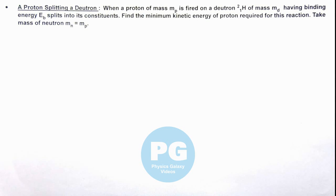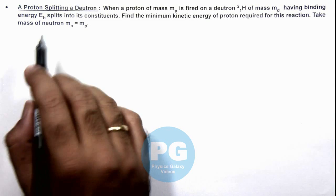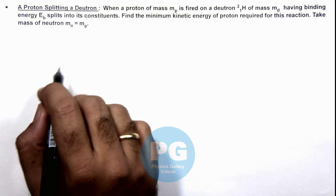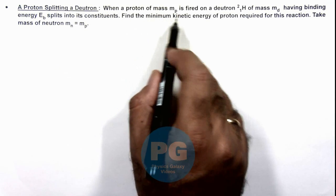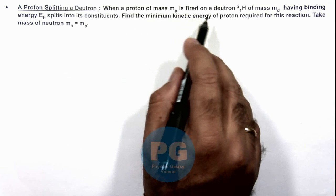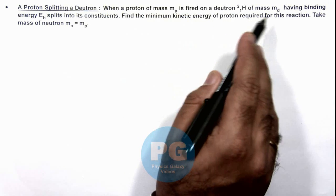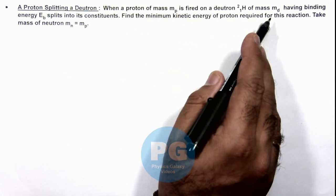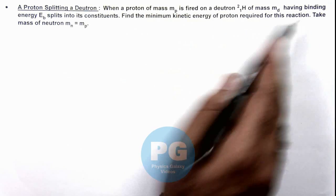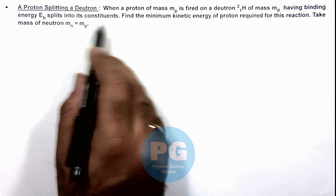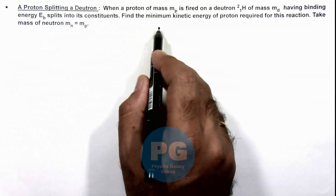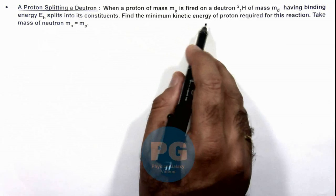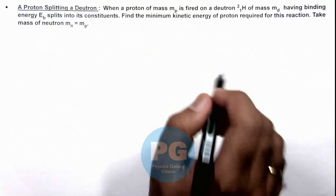In this illustration we'll analyze a proton splitting a deuteron. We are given that when a proton of mass mp is fired on a deuteron of mass md, having binding energy Eb, and splits into its constituents, we are required to find the minimum kinetic energy of the proton required for this reaction.